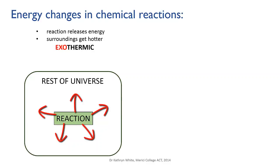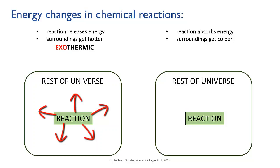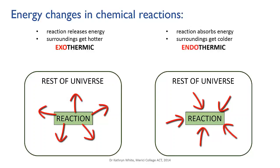If a chemical reaction absorbs energy, where is it going to get the energy from? It has to come from the surroundings — that is, from somewhere in the rest of the universe. Energy flows from the surroundings into the reacting chemicals and is incorporated or stored as chemical energy in the molecules of the products of that reaction. Because energy is being removed from the surroundings, you observe this as the surroundings cooling down. You may also observe it as the reaction only being able to proceed if you provide a continual supply of extra heat from the outside. Such a reaction is called endothermic — heat to the inside, where the inside is the newly formed molecules.